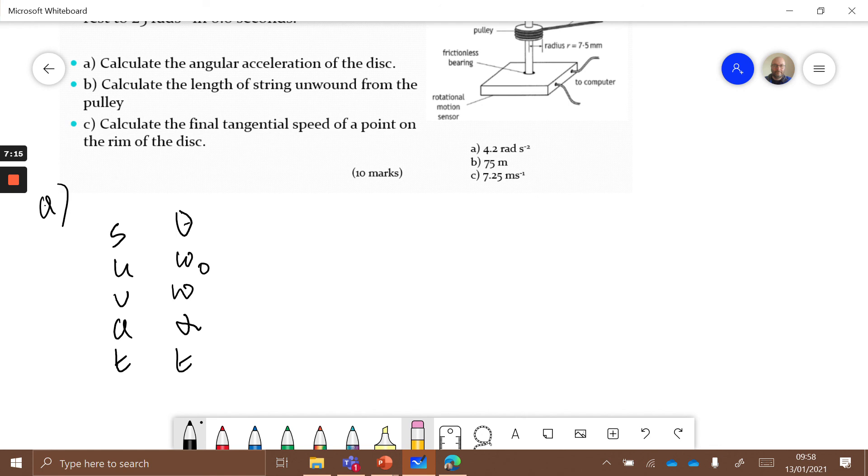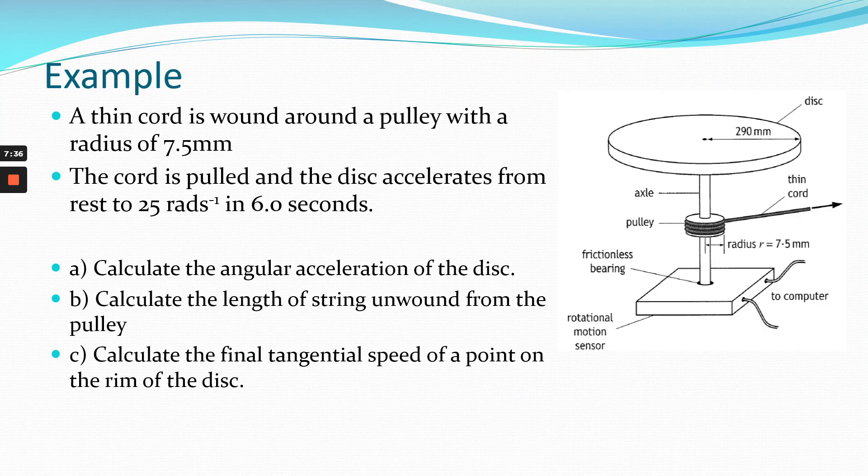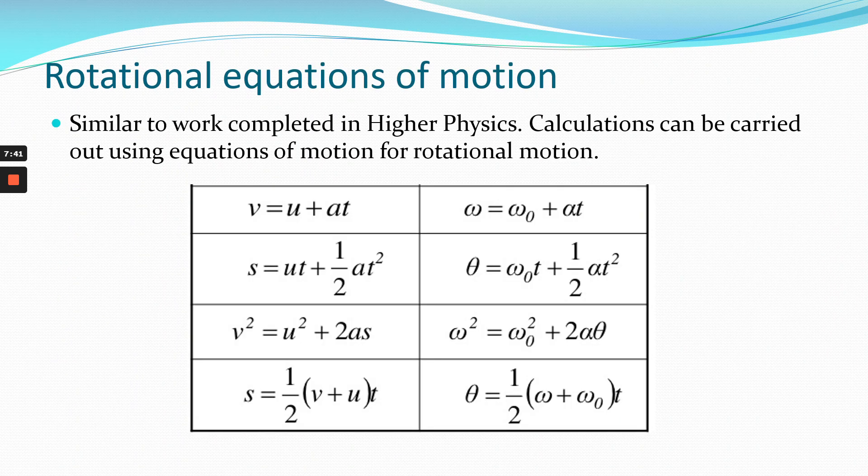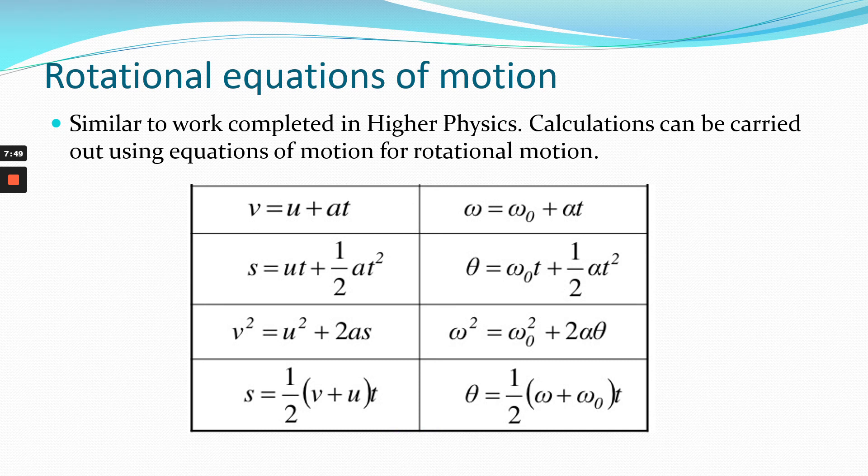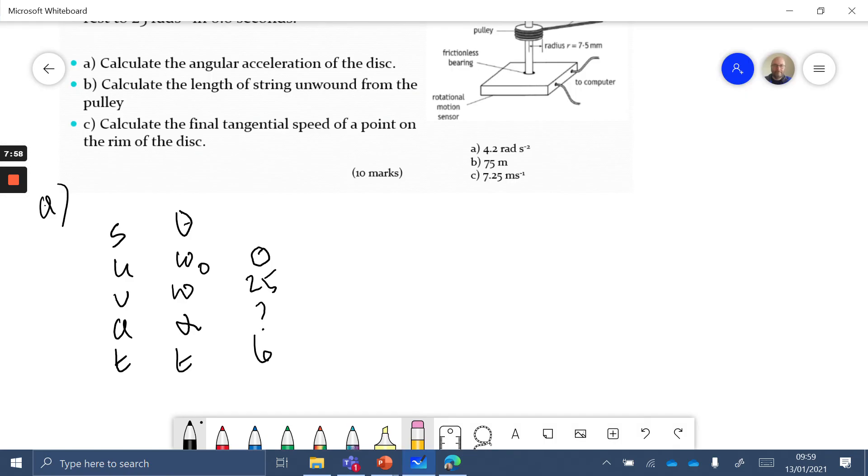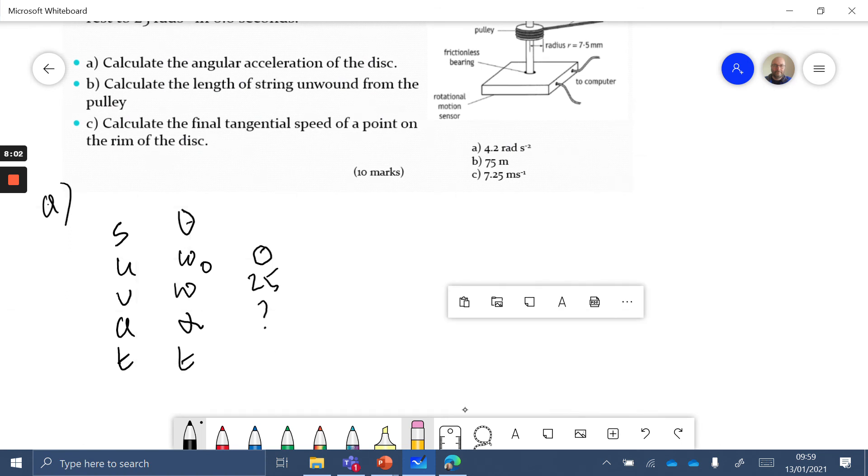When we were in Higher we might have done this with SUVAT, so we can actually do the same thing. Theta, omega naught, omega, alpha, t. Now SUVAT had a nice ring to it. Theta omega omega alpha t doesn't really have the same ring to it, but we can do exactly the same approach. We don't have the angular displacement. We know it starts from rest so omega naught is zero, and we know it accelerates to 25 radians per second. We want the angular acceleration and the time taken was six seconds. At this point I'd be very tempted to go back to my equations of motion. Let's just have that there. Which one is going to give me what I need? I'm looking for alpha and I have omega naught, omega, and t.